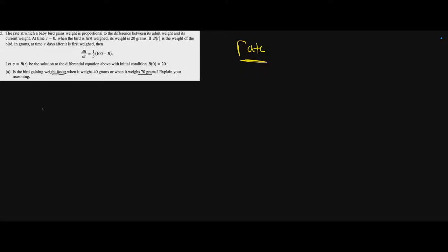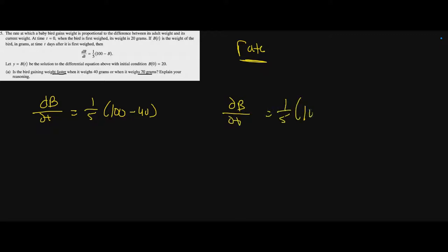We already have the rate equation, which is db/dt = (1/5)(100 - b). So we compute db/dt = (1/5)(100 - 40) and db/dt = (1/5)(100 - 70). That gives us 60/5 = 12 and 30/5 = 6.